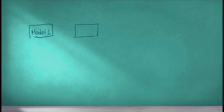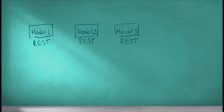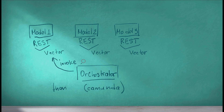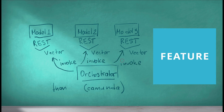Imagine that you have a set of machine learning models, where each subsequent model uses the output of the previous one, and each model is deployed as a standalone RESTful service. In this scenario, an external orchestrator should invoke these models according to a predefined process diagram in a specific order. The orchestrator is also responsible for data preparation — in other words, some sort of feature engineering.